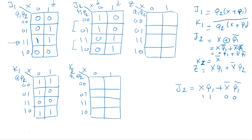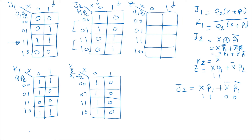K2 is simply X-bar, so whenever X=0 (first column), we place ones. For the Z expression — Z equals X·Q1 OR X-bar·Q2 — when X=1 and Q1=1 we place ones in those two cells, and when X=0 and Q2=1 we place ones in those two cells. Everything else is zero.